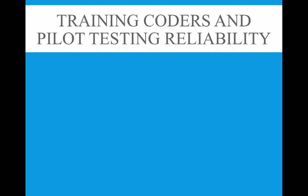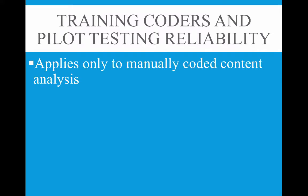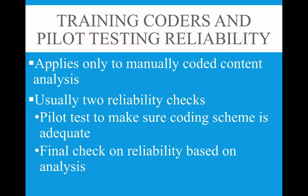When research is done by one person, developing and agreeing upon coding is straightforward. But in larger studies undertaken by multiple researchers — often graduate students — everyone must be on the same page about what's being looked for and how things should be coded so they work together systematically. This applies only to manually coded content analysis. There are usually two reliability checks: first is a pilot test to make sure the coding scheme is adequate, allowing you to find problems before going through all the data.